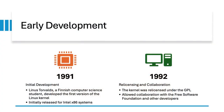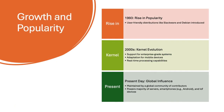In 1991, Linus Torvalds developed the first Linux kernel initially for Intel x86 systems. By 1992, it was re-licensed under the GPL, enabling collaboration with the Free Software Foundation and other developers. In 1993, Linux gained popularity with user-friendly distributions like Slackware and Debian. By the 2000s, the kernel evolved to support enterprise systems, mobile devices, and real-time processing.